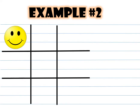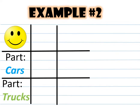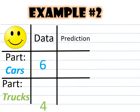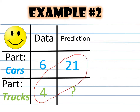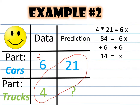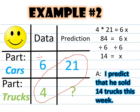We've got our tic-tac-toe board set up for example two. The smiley face is in the top left corner; one part is cars and one part is trucks. Data is at the top and prediction is at the top. We fill in six cars and four trucks. If he sold 21 cars, we cross multiply four times 21 to get 84, then divide by the six we didn't use to get 14. That means I predict he sold 14 trucks this week.